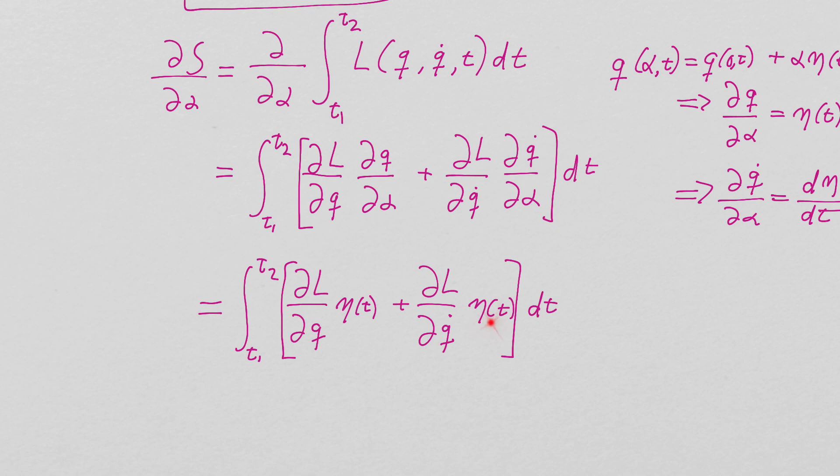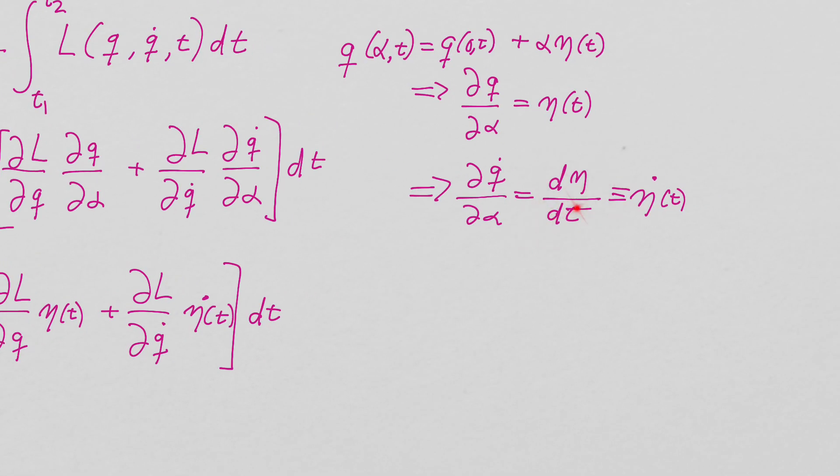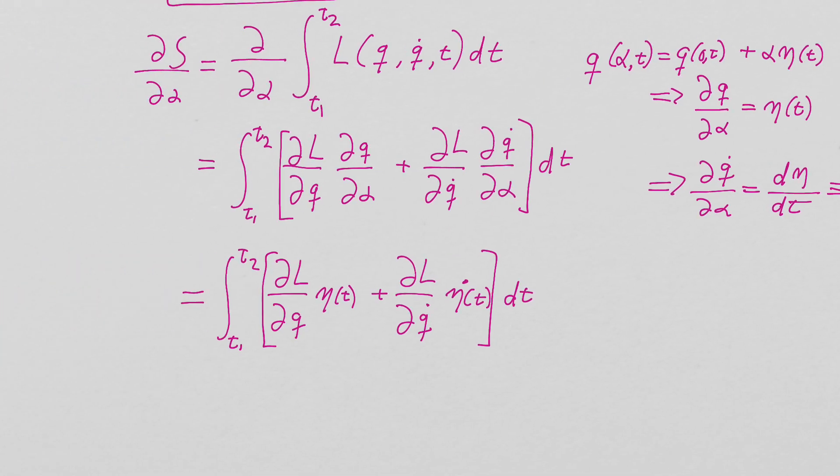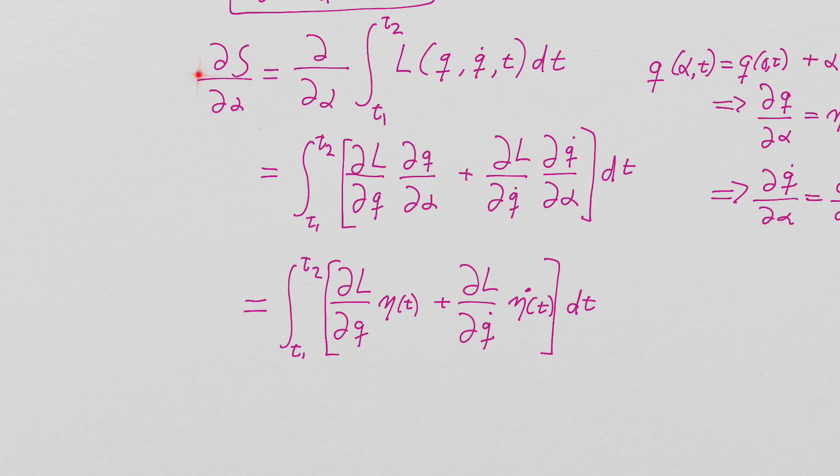So using this process, taking this derivative with respect to alpha is pretty easy. It's just going to be dL dq dq d alpha and dL dq dot dq dot d alpha. But we just went to the trouble of figuring out those two things were these etas. That should be an eta dot. Eta dot, because it's dq dot d alpha and dq dot d alpha is eta dot. So there we have this expression for the partial derivative of the action with respect to alpha.